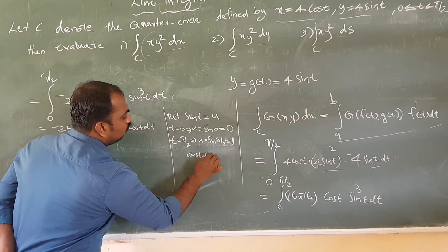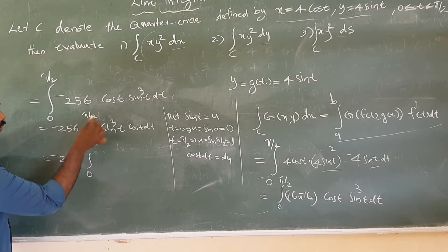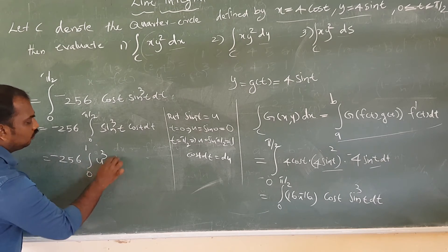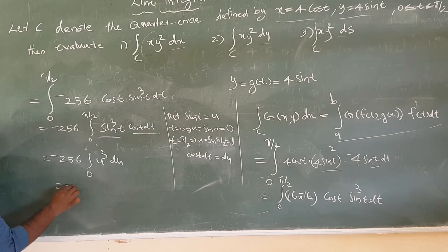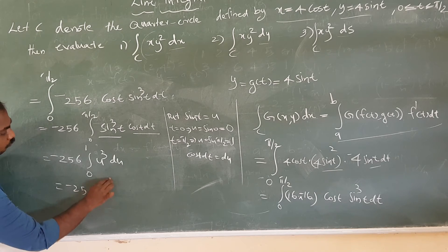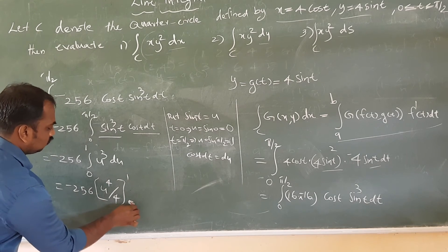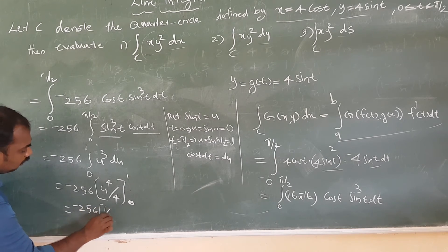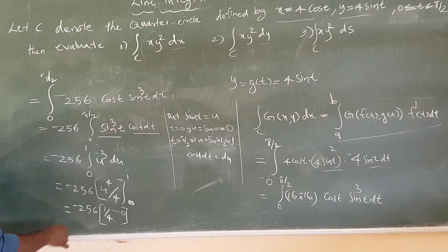So this equals minus 256 times the integral from 0 to 1 of u³ du. Evaluating: minus 256 times [u⁴ / 4] from 0 to 1.